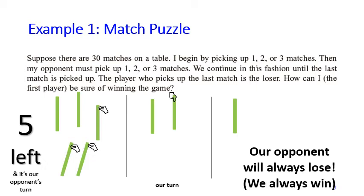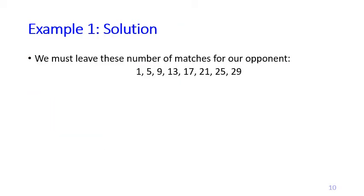So there is a pattern of match counts we should leave for our opponent to guarantee we always win. Five matches is a winning position for us, while four matches is one to avoid. The pattern is: we must leave 1, 5, 9, 13, 17, 21, 25, and 29 matches on the table for our opponent when it's their turn.